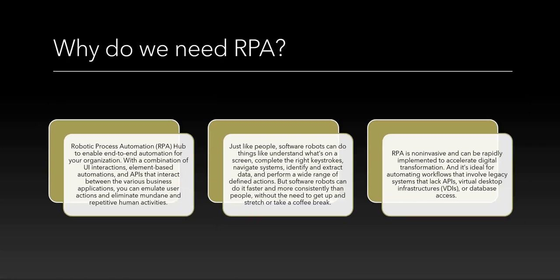Why do we need RPA? It is used for end-to-end automations and can be a combination of UI interactions, element-based automations, and APIs that interact between various business applications. These software robots can do things faster and consistently — they do not need a coffee break. The primary use of RPA is where you cannot automate integrations; for example, if you are setting up an integration with a legacy system that doesn't support REST API or SOAP API and you actually have to log into that system manually. RPA can also log into VDIs, read emails, take action on emails, or access databases.